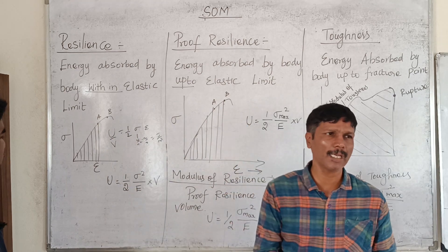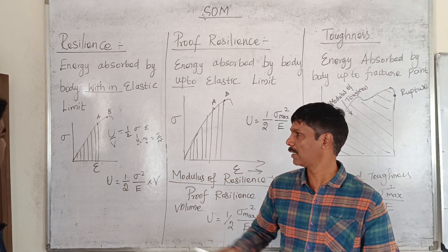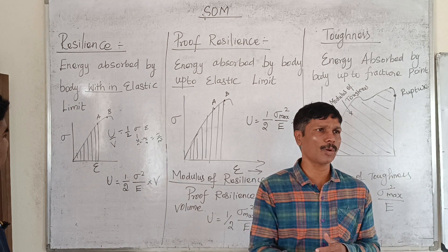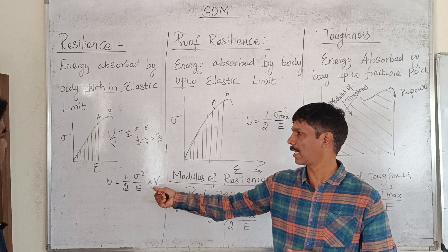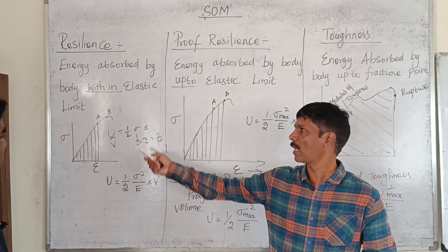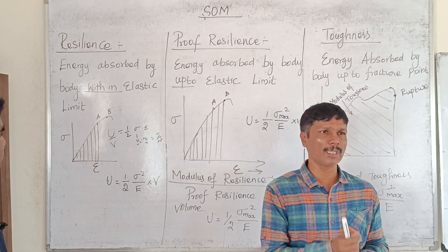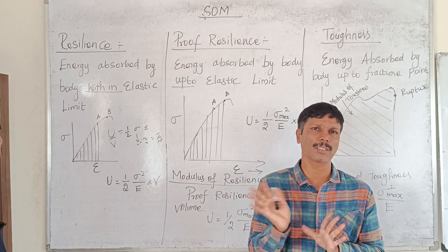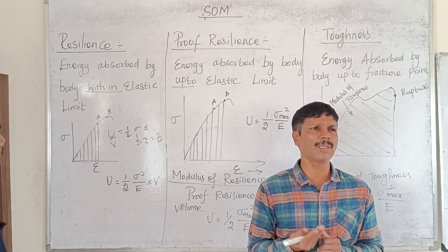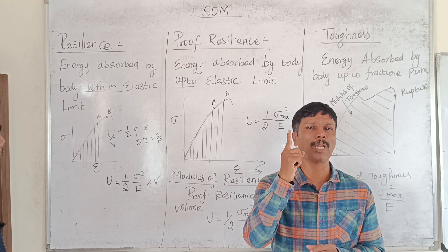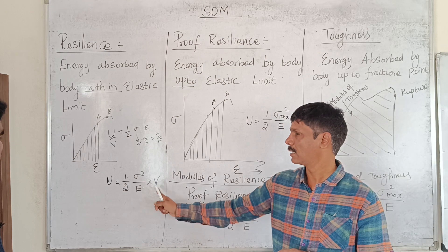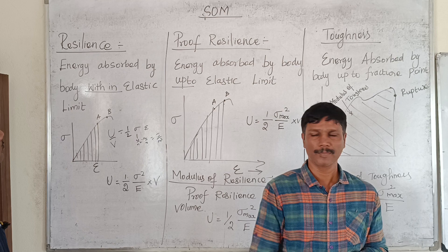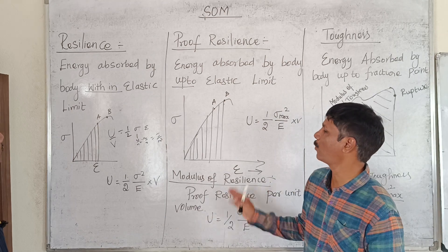The area under the stress-strain curve gives resilience. Modulus of resilience is the area under the stress-strain curve up to the elastic limit. If we multiply by volume, that is resilience. This is the proof resilience. Energy absorbed by the body up to the elastic limit is the proof resilience.